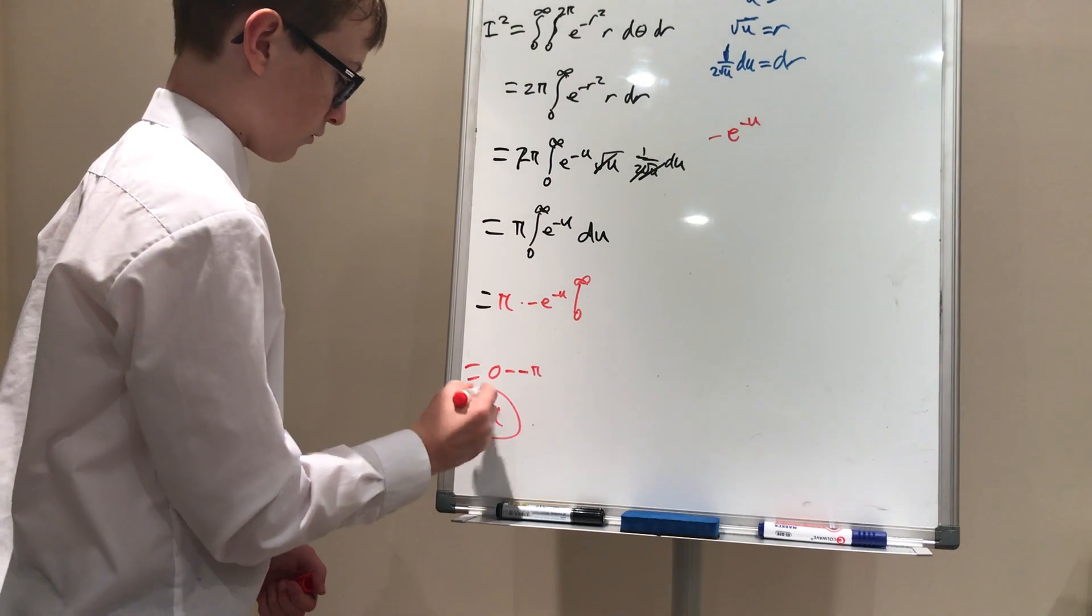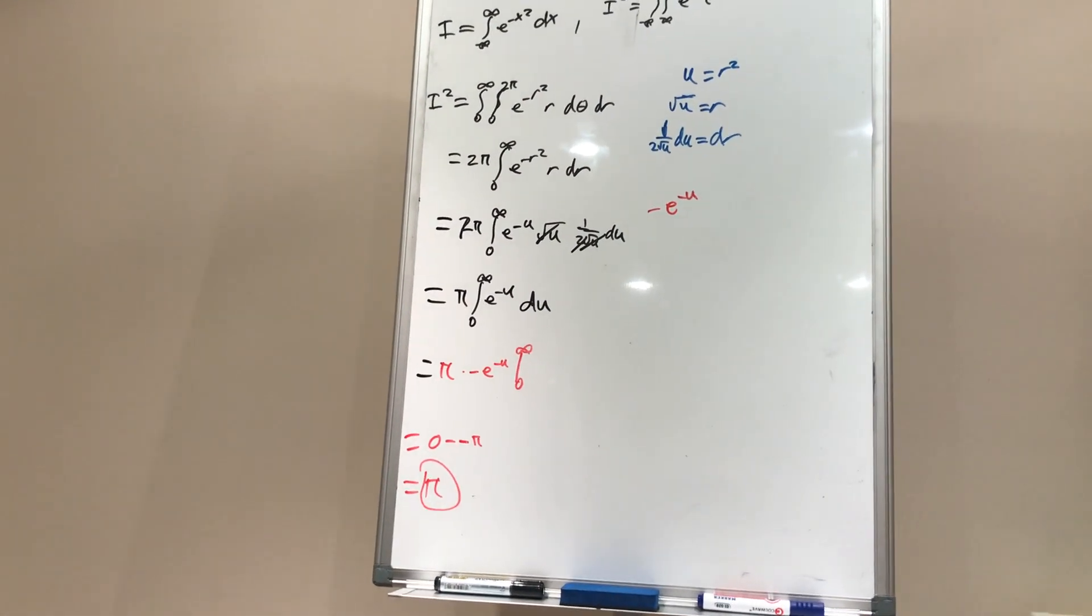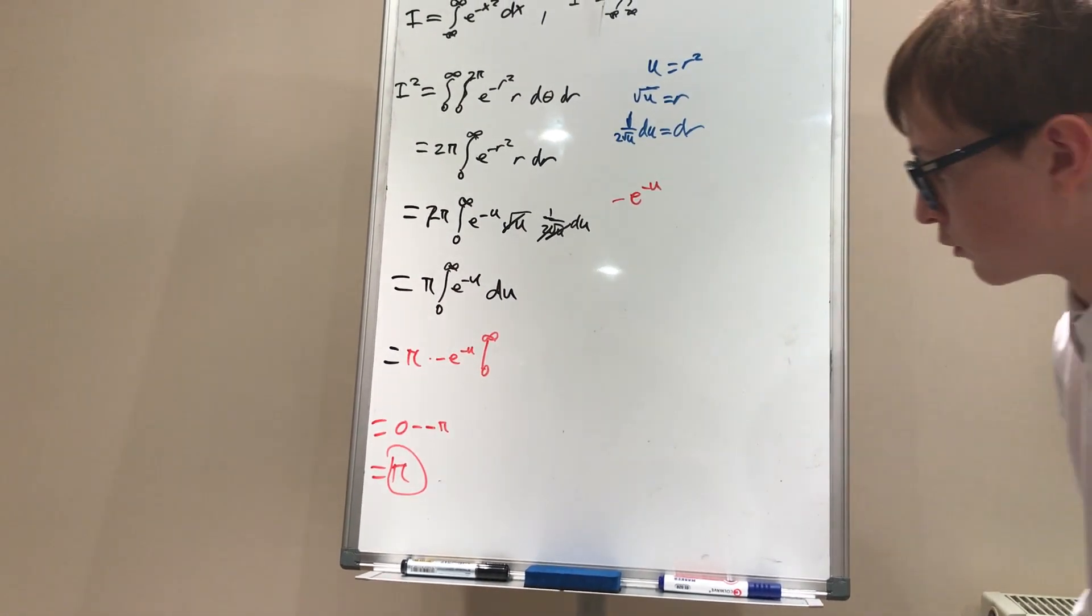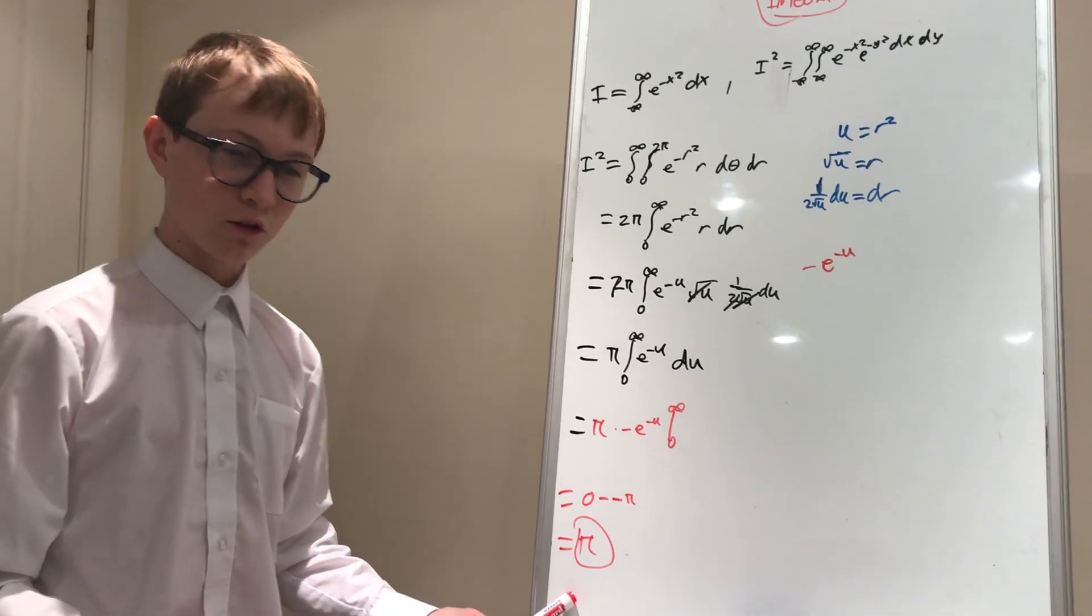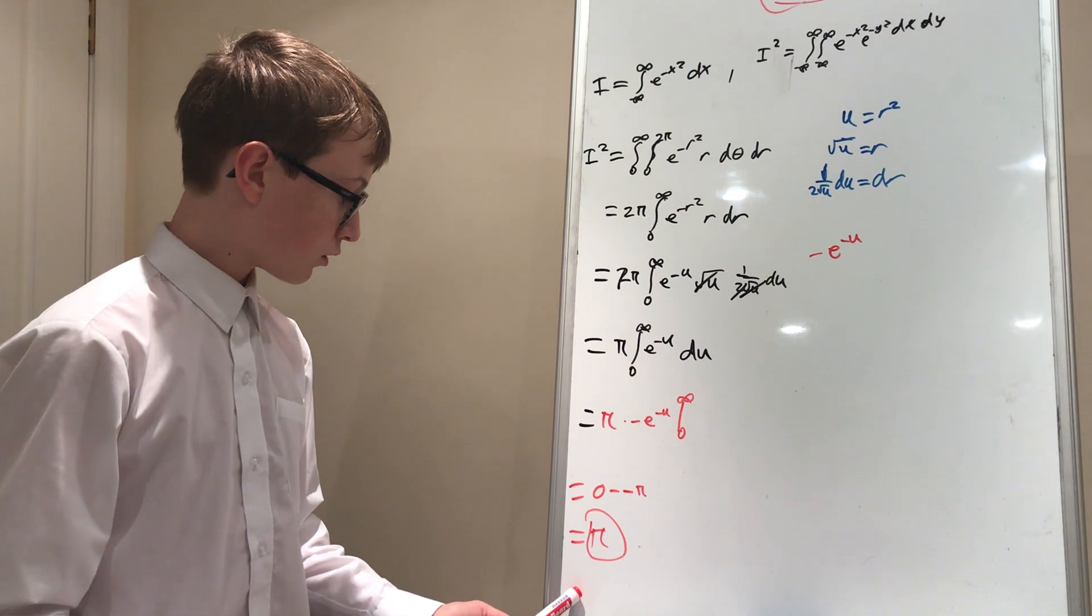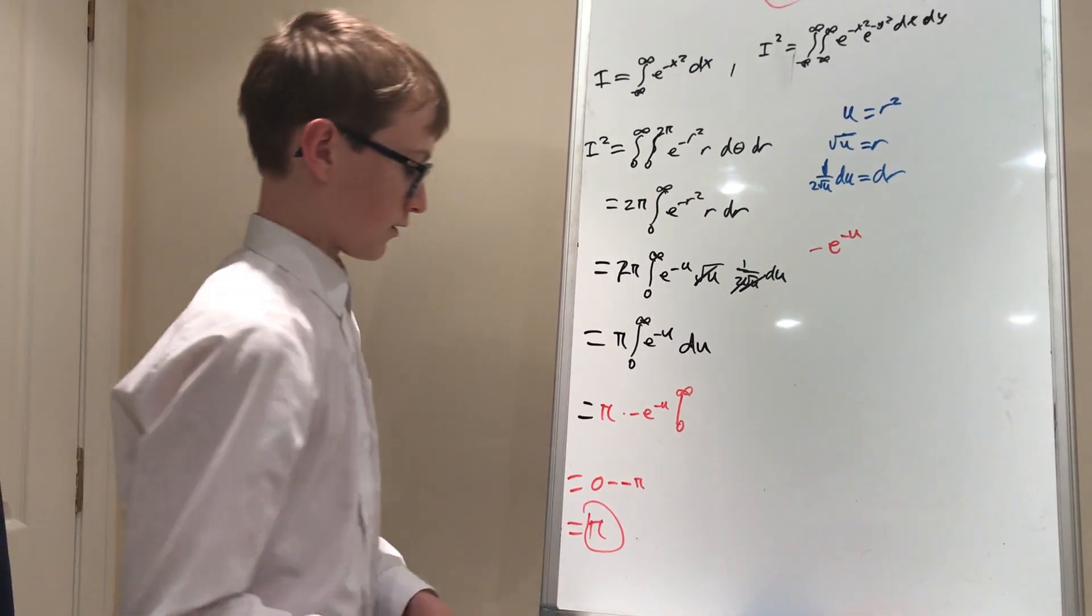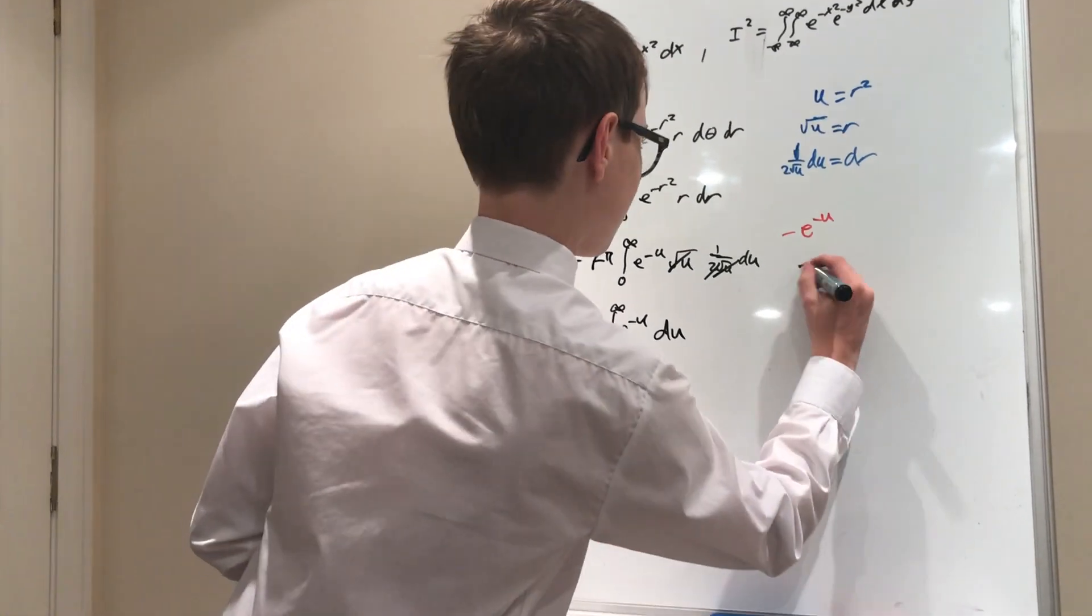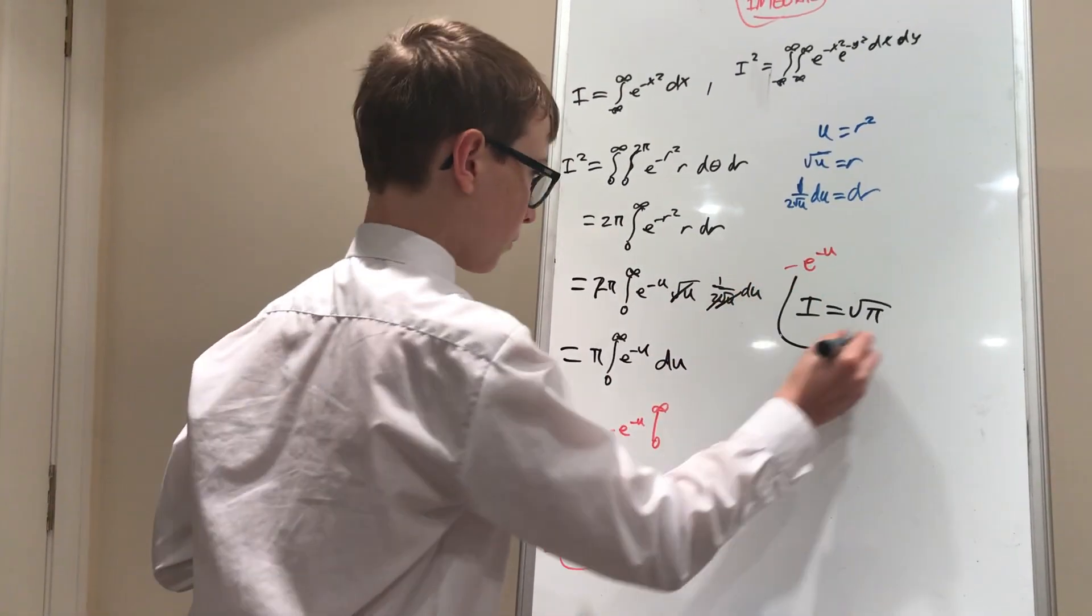And as always, we're done. Um, what? Hold on. This is, what? It's wrong? That's just i squared. So i actually equals the square root of pi. And now we're really done.